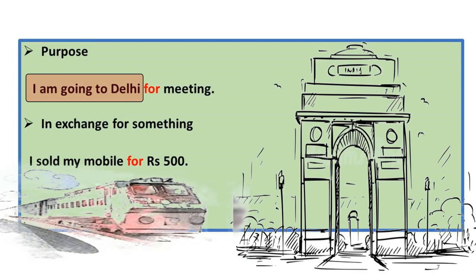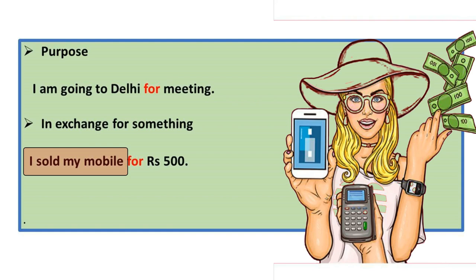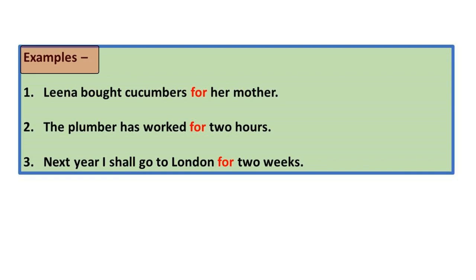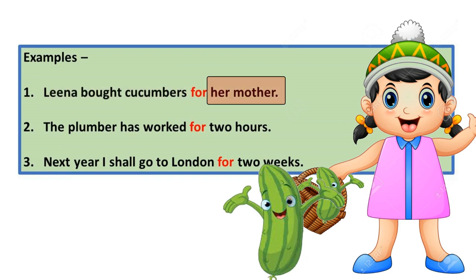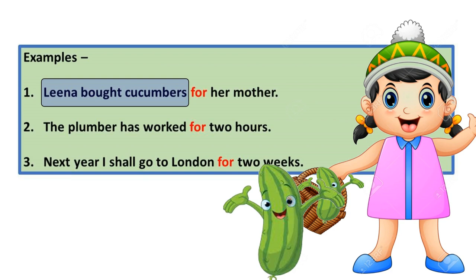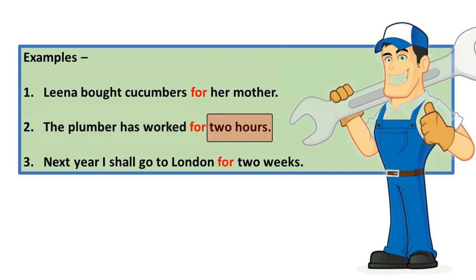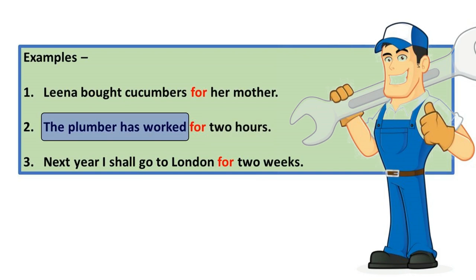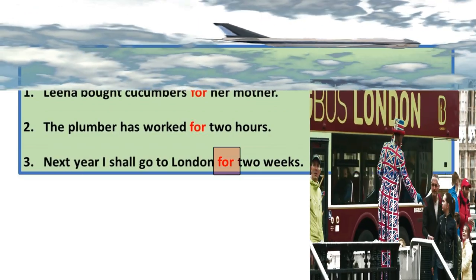Then 'for' is also used to show an exchange for something. For example: 'I sold my mobile for rupees five hundred.' Let's read some more examples. Please repeat after me. Lena bought cucumbers for her mother. The plumber has worked for two hours. Next year, I shall go to London for two weeks.